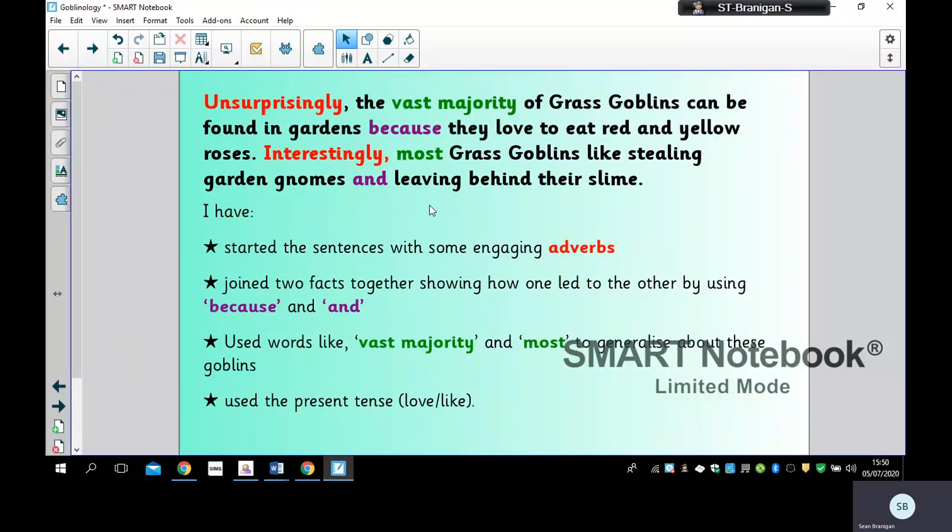Unsurprisingly, the vast majority of grass goblins can be found in gardens because they love to eat red and yellow roses. Interestingly, most grass goblins like stealing garden gnomes and leaving behind their slime.